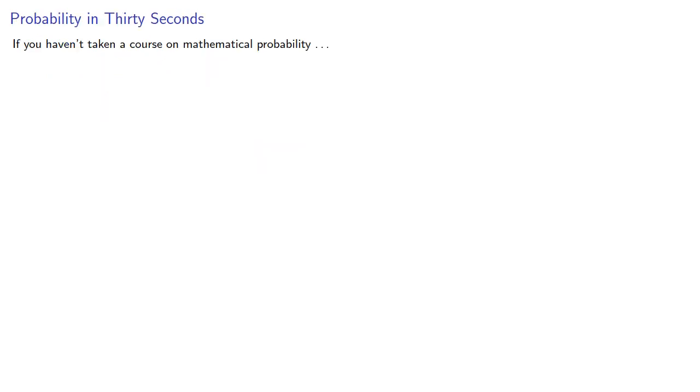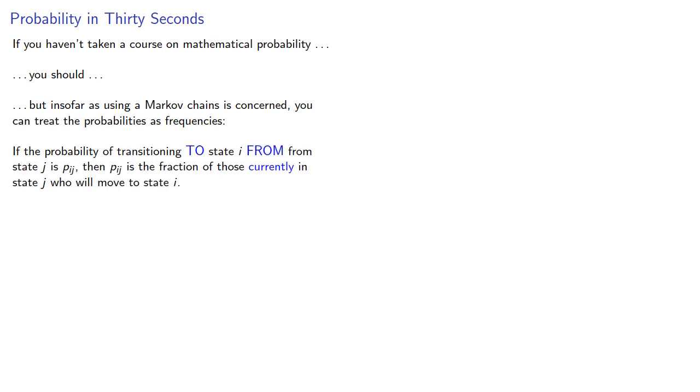If you haven't taken a course on mathematical probability, you should. But insofar as using Markov chains is concerned, you can treat the probabilities as frequencies. If the probability of transitioning to state i from state j is pij, then this is also the fraction of those currently in state j who will move to state i.